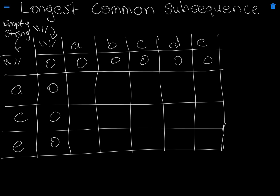Then we check for A and A in both strings to see if there's a match — there is in this instance. Next we check A and B: since there was a previous match from A and A, we continue with one, as there's only been one match. We continue until the end of the string: A and C is one, A and D is one, and A and E is one.